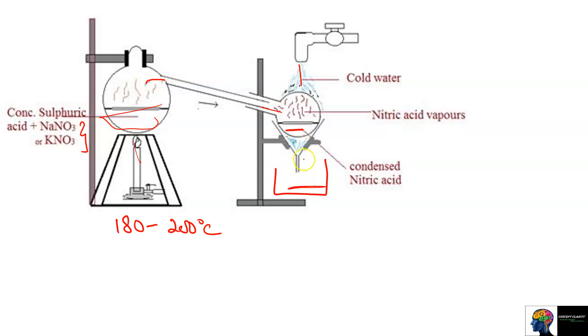So you can collect the condensed nitric acid. That's it, simple. The reactants that will be required for this reaction are most important: sulfuric acid H2SO4 that should be concentrated, then we need potassium nitrate or sodium nitrate, we can use anything.